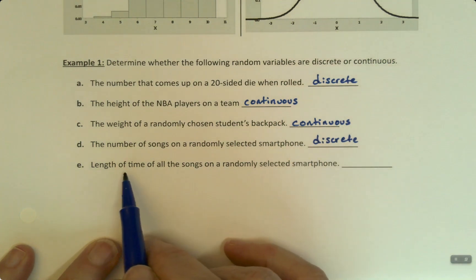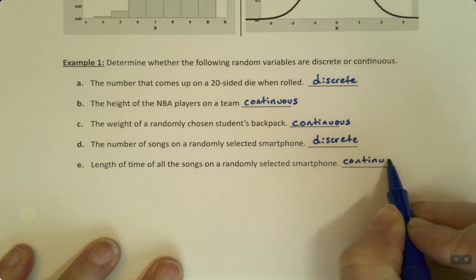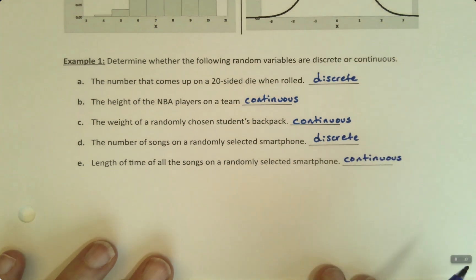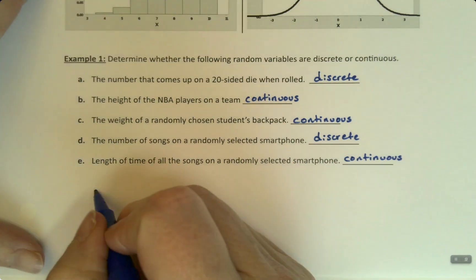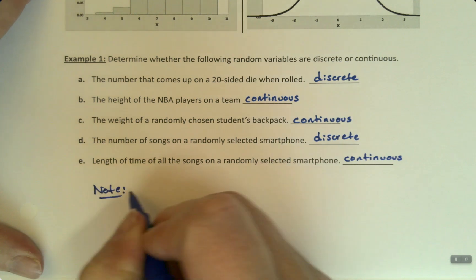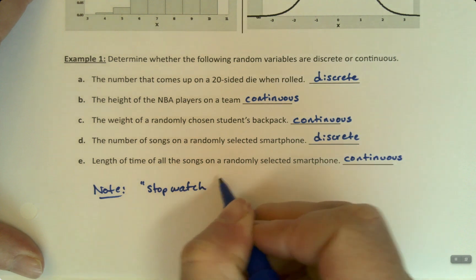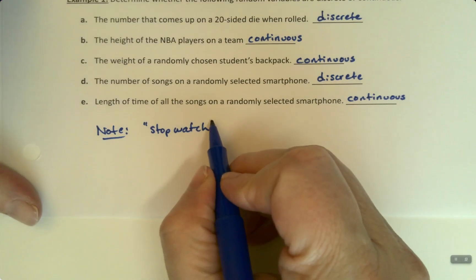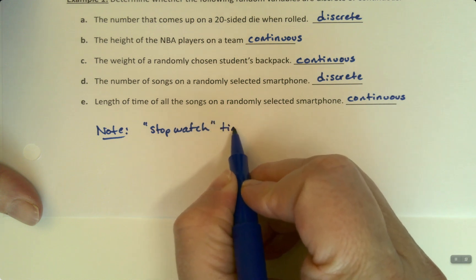Whereas, the length of time would be continuous. Because I can get more decimal places on that time count if I just have a better clock. Right? A better stopwatch time. So, I'll make a note here. Your stopwatch time, which is the time it takes to do an activity, to race a race, to swim a mile, to play this song, is always continuous.